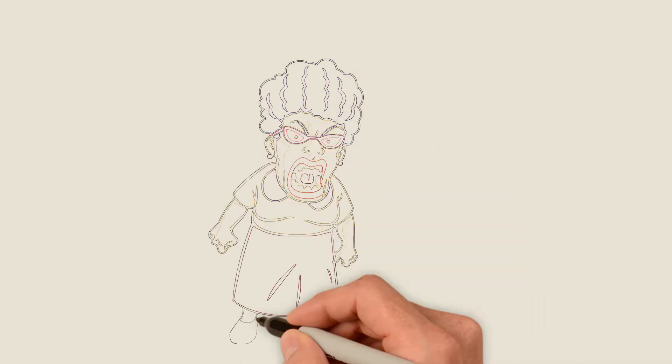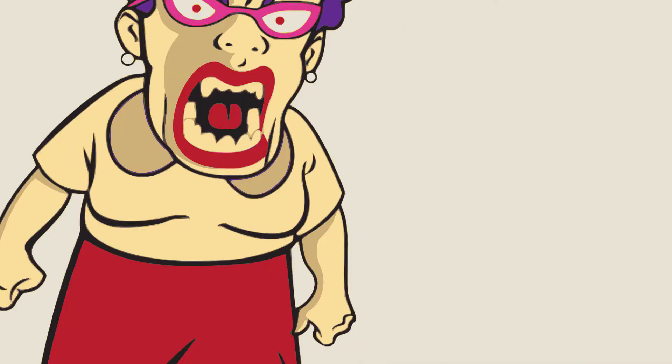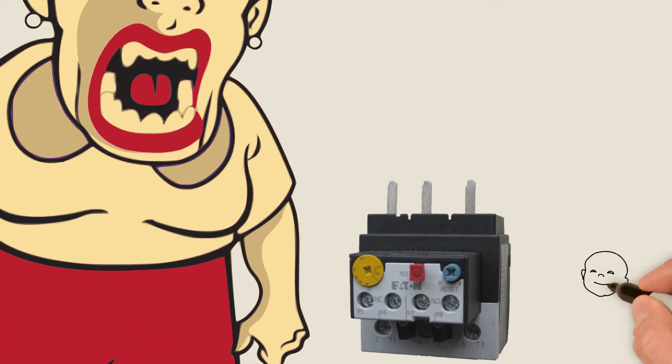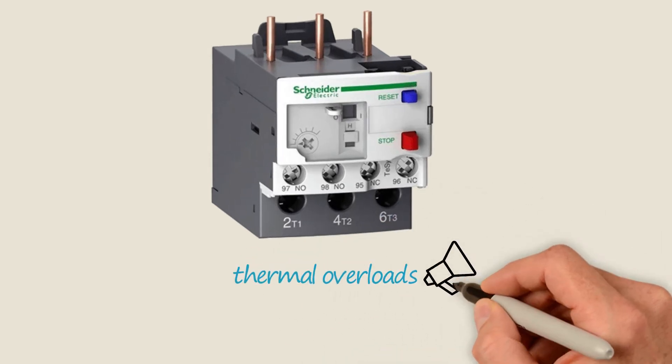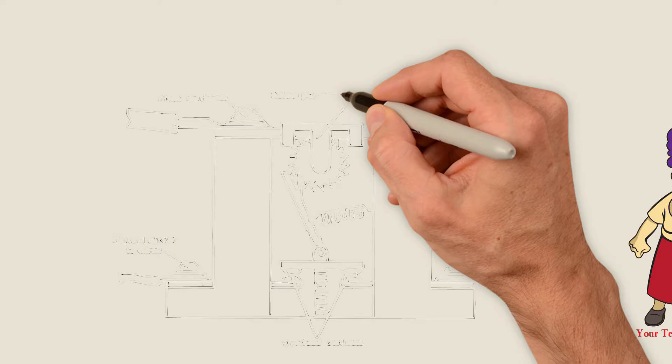What if your teaching assistant asked you how does this little box work internally? What are you going to say? Overload relays are sometimes called thermal overloads. These are probably the most popular type of overload protection.